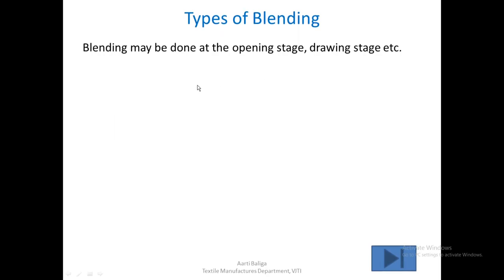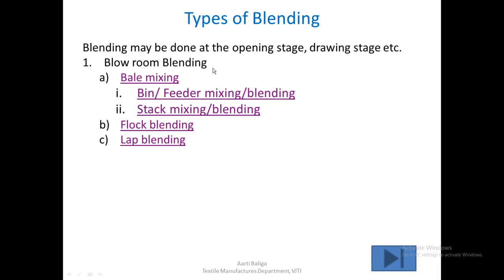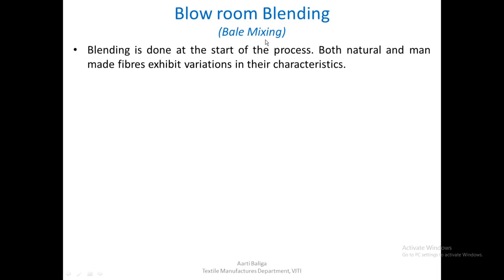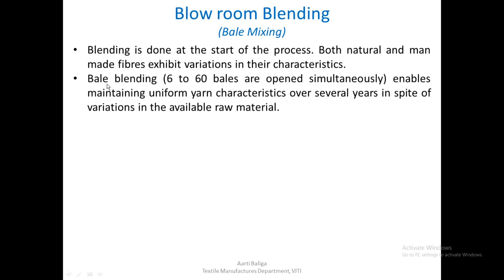Mechanically, blending may be done at the opening stage, drawing stage, and other stages. In blow room blending, it is further sub-classified as bale mixing, flock mixing, and lap blending. Bale mixing: blending is done at the start of the process. Both natural and manmade fibers exhibit variations in their characteristics. In bale blending, 6 to 60 bales are opened simultaneously, enabling maintenance of uniform yarn characteristics over several years despite variation in available raw material.